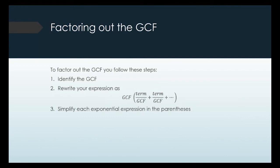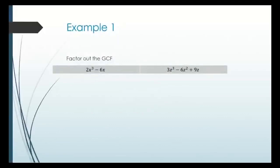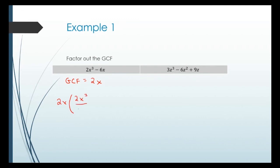Once you write the division step, simplify the exponential expressions inside the parentheses. For the polynomial 2x cubed minus 6x: the GCF is 2x. I write 2x in front, and then in parentheses I have 2x cubed divided by 2x, minus 6x divided by 2x.